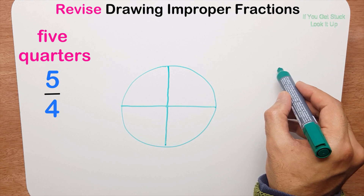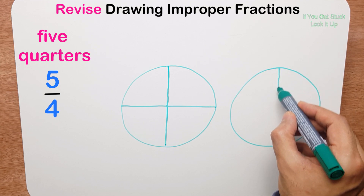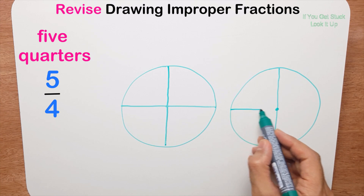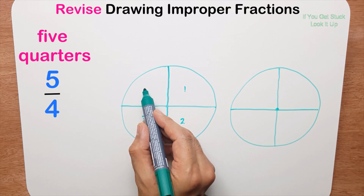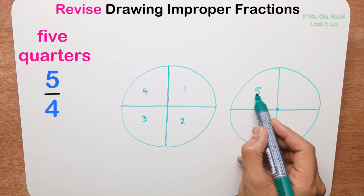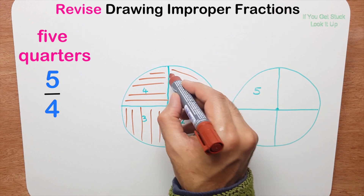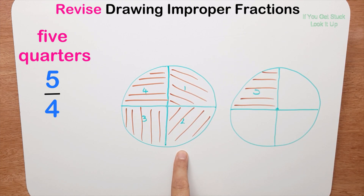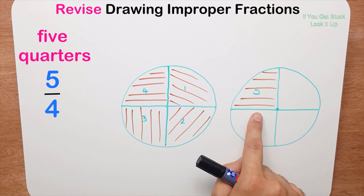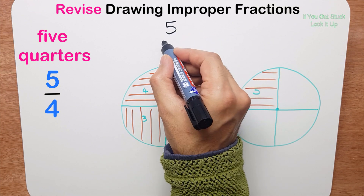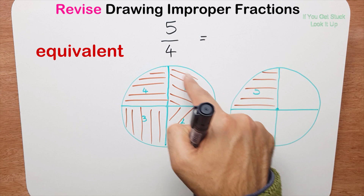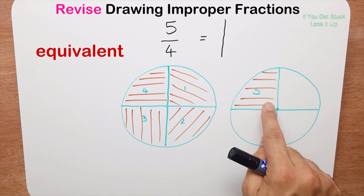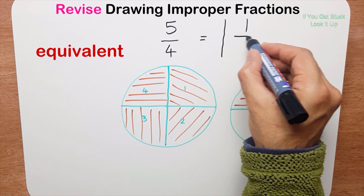I need five pieces, so here's another pizza. I halve it and halve it again to get four quarters. Counting the shaded pieces: one, two, three, four — and I need one from the second pizza to make five. You can see visually it's one whole pizza and one quarter. So five quarters is equal to one and one quarter.